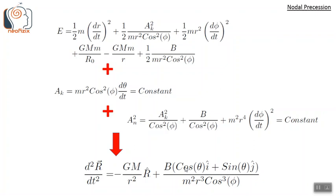In real-world examples, such as the J2 perturbation case of earth, the J2 perturbation produces additional motion components beyond just pure nodal precession. If we want the pure and ideal form of nodal precession, then we need this b factor in our equations.